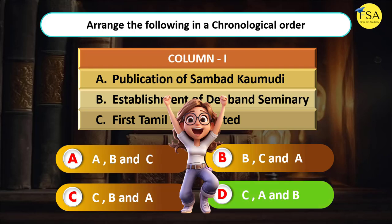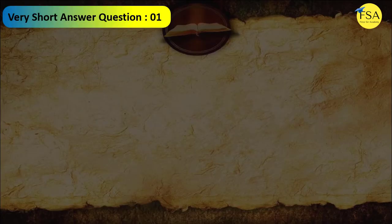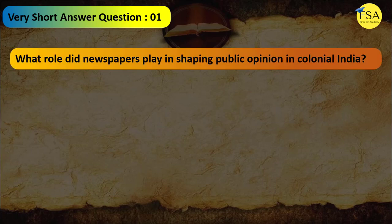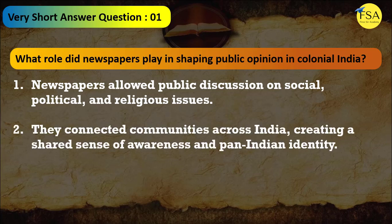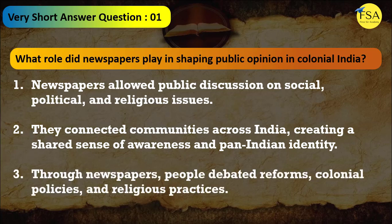We have now completed the five multiple choice questions. Moving to very short answer questions. Question 1: What role did newspapers play in shaping public opinion in colonial India? Newspapers allowed public discussion on social, political, and religious issues. They connected communities across India, creating a shared sense of awareness and pan-Indian identity against the common colonial enemy. Through newspapers, people debated reforms, colonial policies, and religious practices.